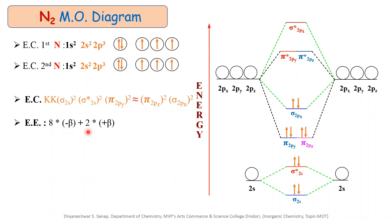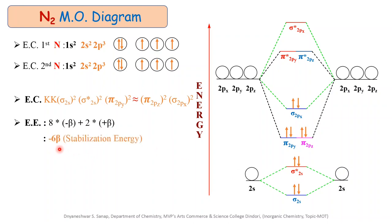Similarly, we put 2 because there are 2 electrons in the sigma-star-2s anti-bonding molecular orbital, and we use plus beta because the energy of the anti-bonding molecular orbital is higher with respect to the energy of the atomic orbital. After solving this equation, we get a value of minus 6 beta, which is the stabilization energy — the energy evolved during the formation of the N2 molecule.